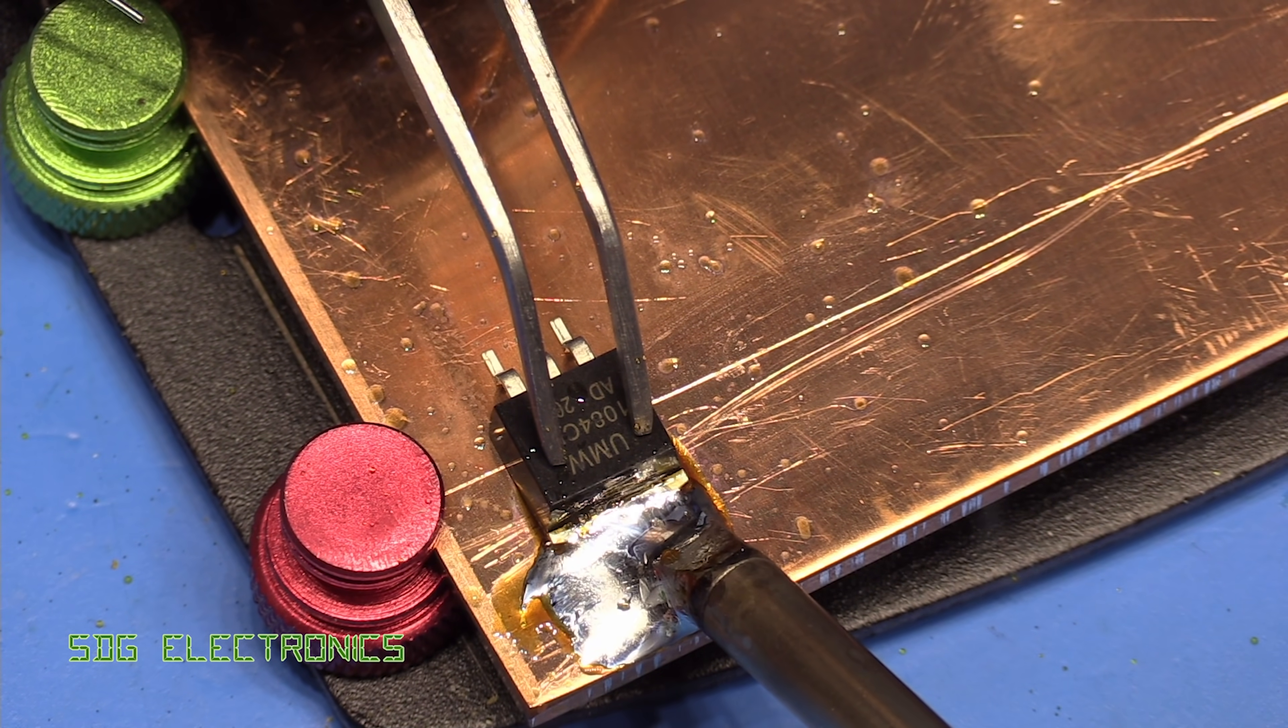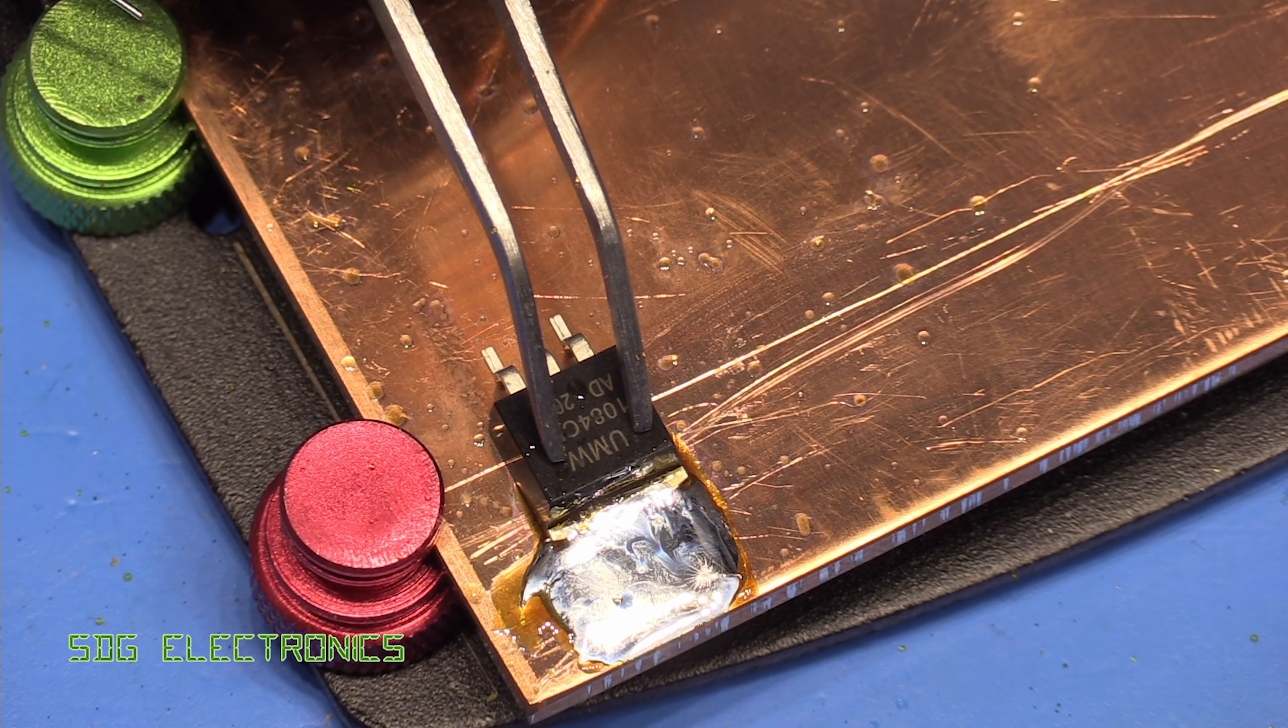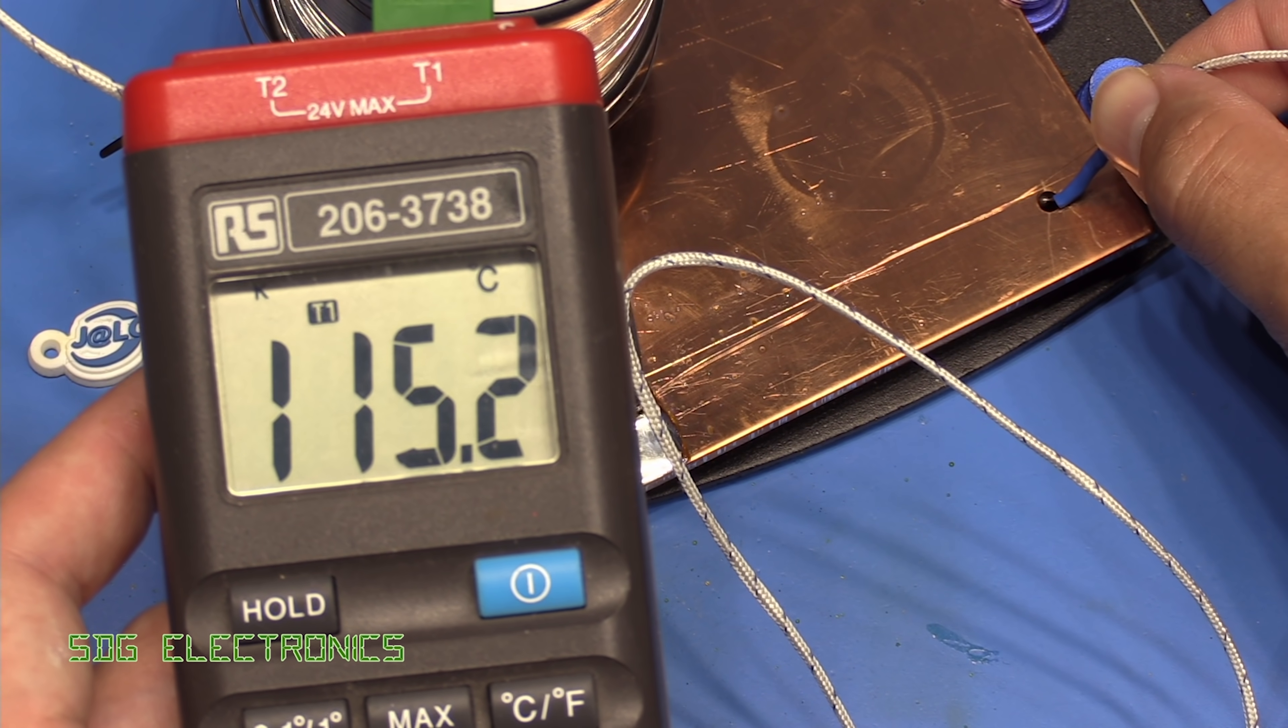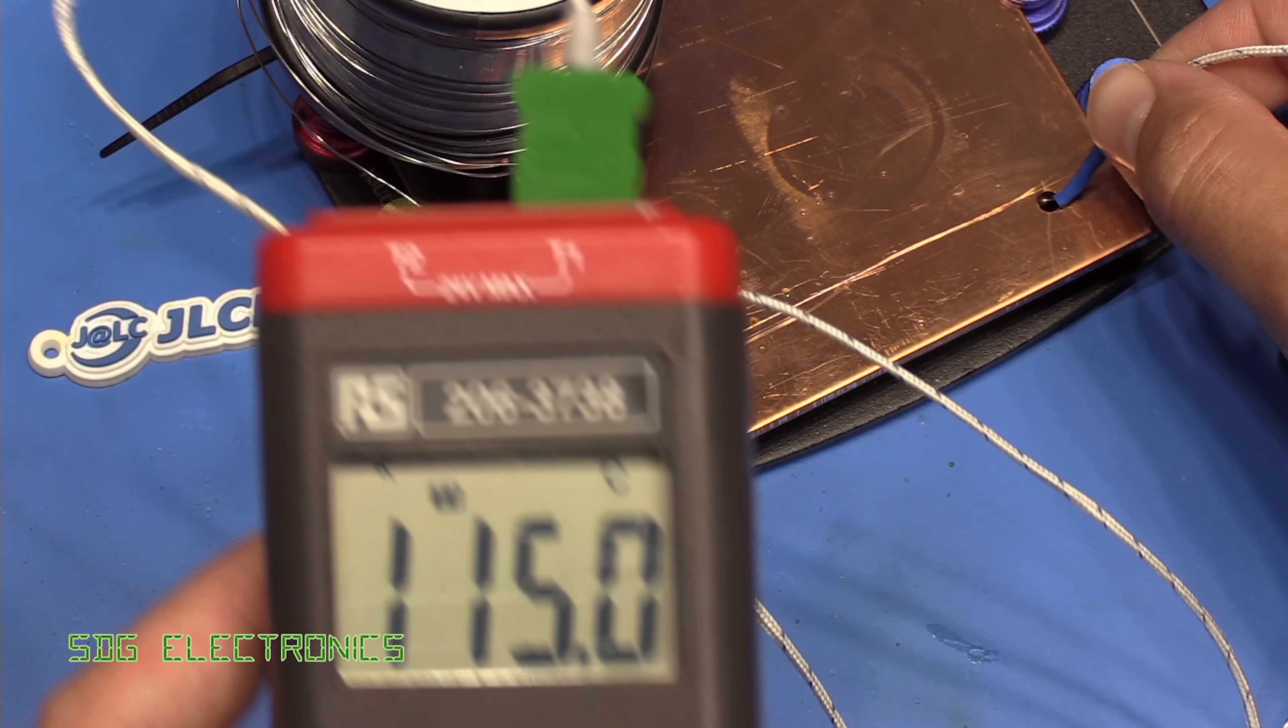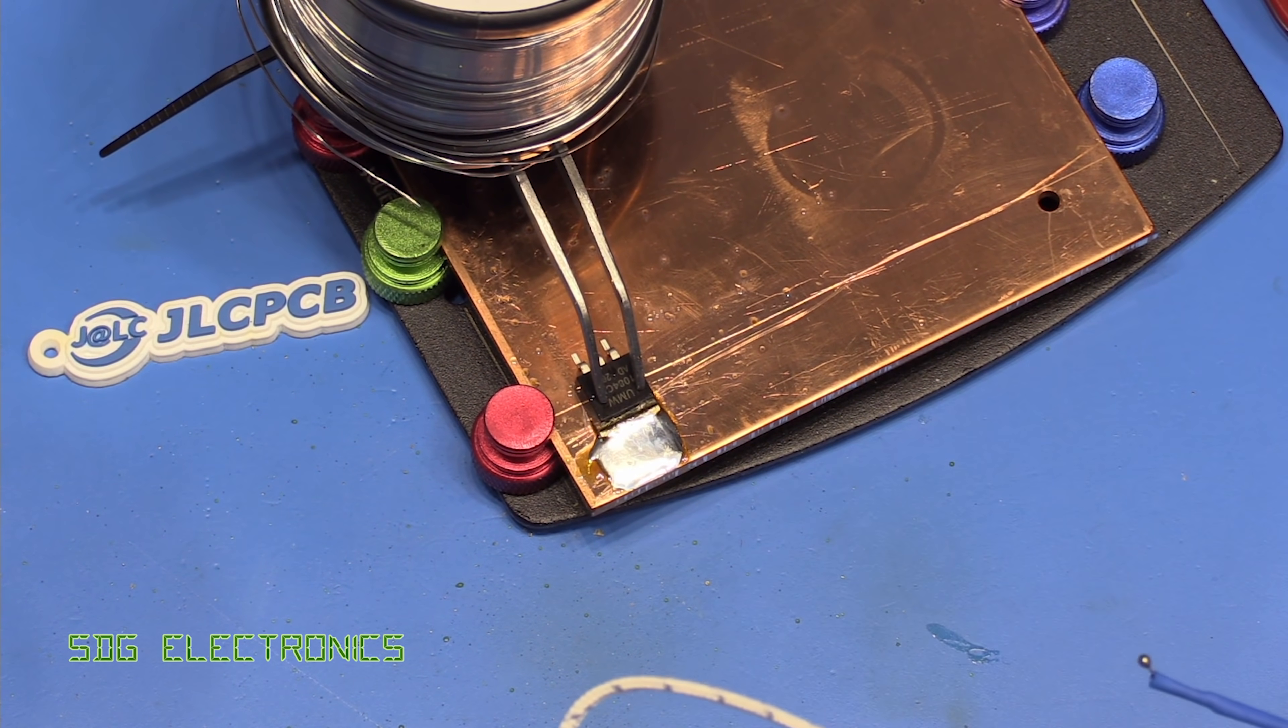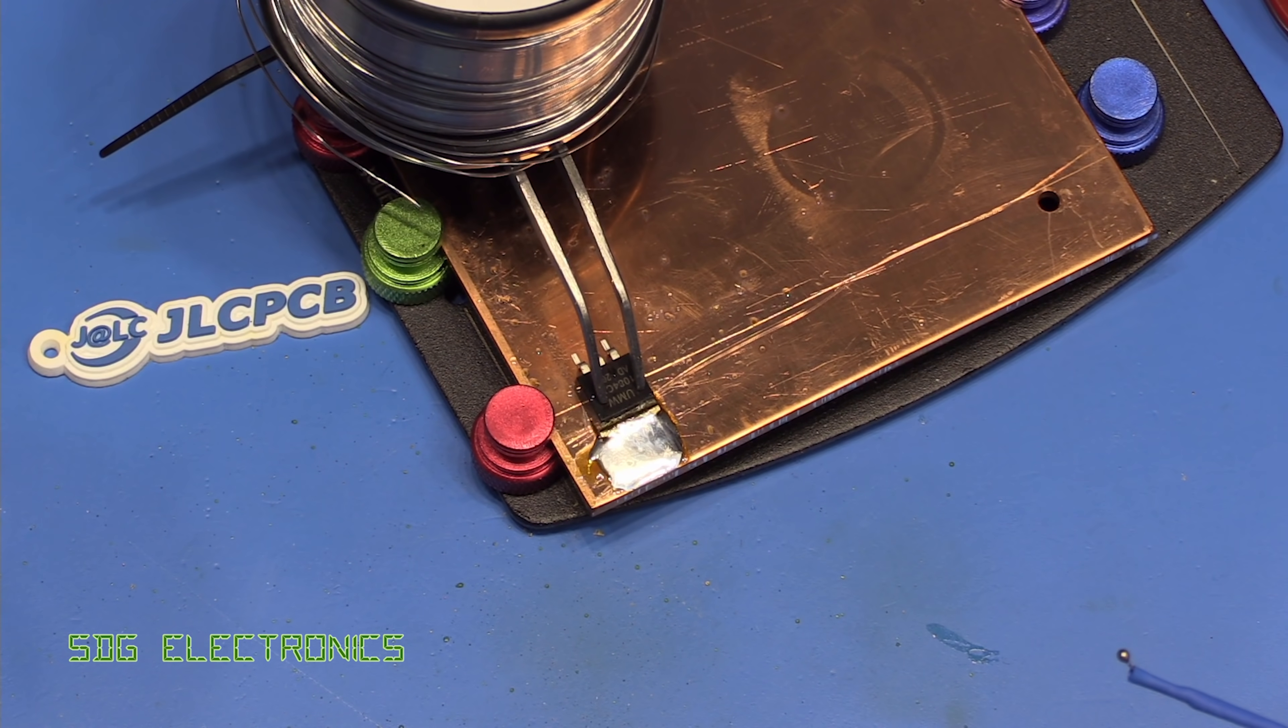So we have managed to solder onto a solid piece of copper here. And as you can see, even over here the temperature of the copper is 115 degrees C. So this is a significant amount of heat sinking and we were able to solder that package onto there.